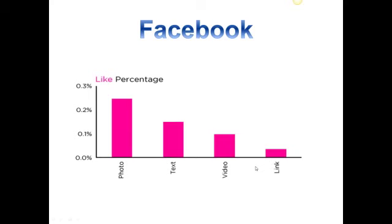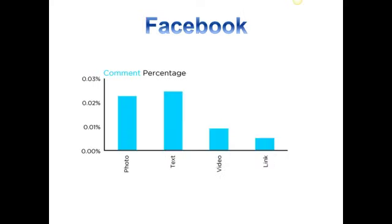First off, Facebook like percentage. The most likes come from photos — we've touched on this a bunch. Photos create the most likes out of anything I'm going to cover. Today I'm going to cover video, but it's still third in line. Like percentage: if you're putting a post up and not putting a photo with it, you are missing a huge percentage of people that might like it, which would put it into another stratosphere of the Twitter feed.